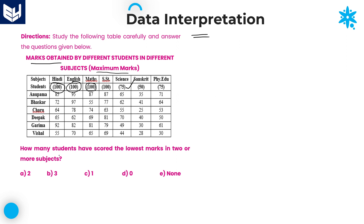Now, looking at the first question: how many students have scored the lowest marks in two or more subjects? We need to calculate the number of students who scored lowest marks in two or more subjects. We will check this problem by individual subject. In Hindi, the lowest marks — Anupama 85, Charu 72. Next, 55 is lowest, and that is Vishal. In Hindi, Vishal is lowest.